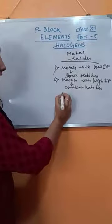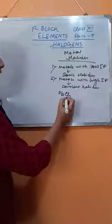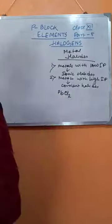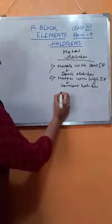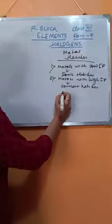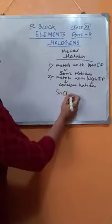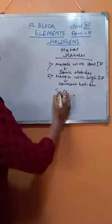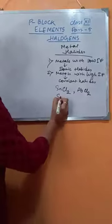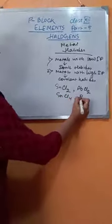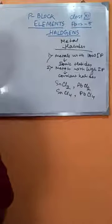Another important property is that you should know about PbCl2, that is lead chloride. Certain metals are present in different oxidation states. For example, tin presents a +2 oxidation state forming SnCl2. PbCl2 is also formed in the +2 oxidation state. SnCl4 is formed in the +4 oxidation state. PbCl4 is also formed in the +4 oxidation state.